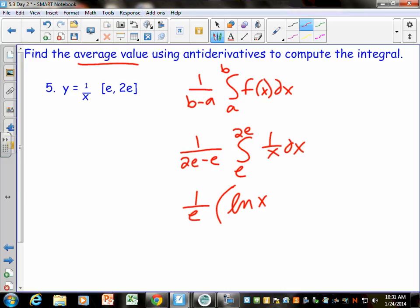And really, you should put absolute value bars around this. Sometimes we get lazy and we don't, because if the bounds are both positive, it's not going to affect it if you don't put absolute value bars around it. And then we're going to evaluate that from e to 2e.